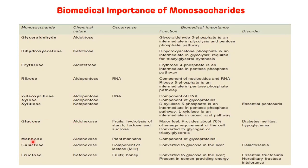Another aldo-hexose is mannose, which is seen in plants and is a component of glycoprotein. Another aldo-hexose is galactose, which is an important component of milk; galactose can be converted to glucose in the liver, and the associated disorder is galactosemia. An example of keto-hexose is fructose — seen in fruits and honey, it can be converted to glucose in the liver, is present in semen providing energy to sperms, and disorders associated with it include essential fructosuria and hereditary fructose intolerance.